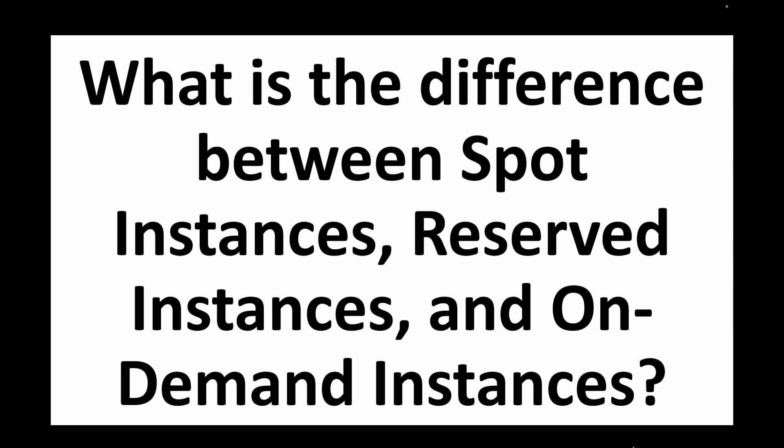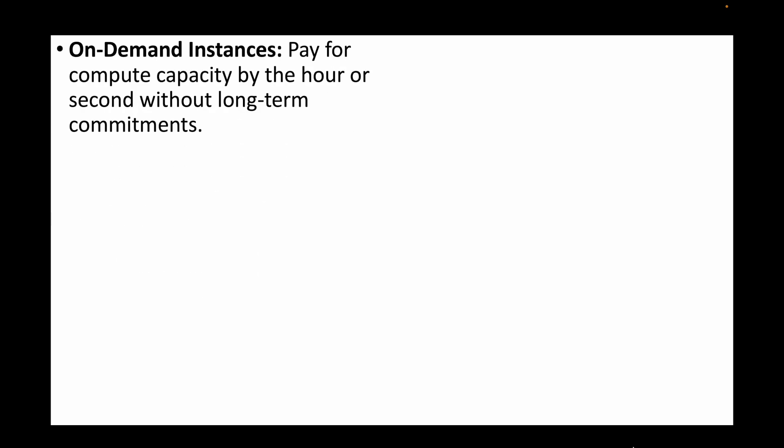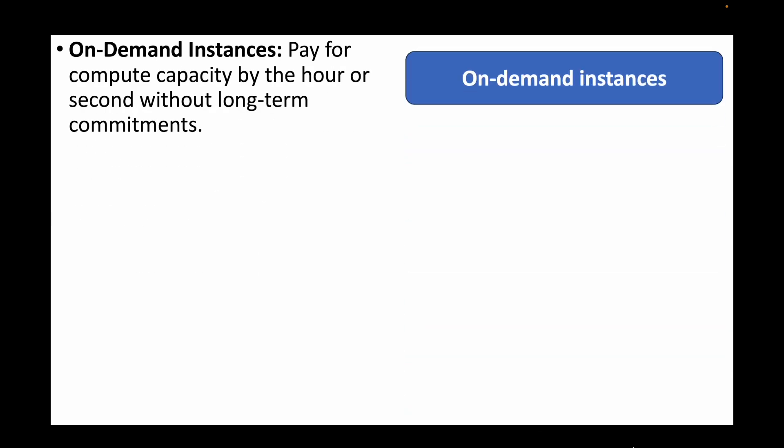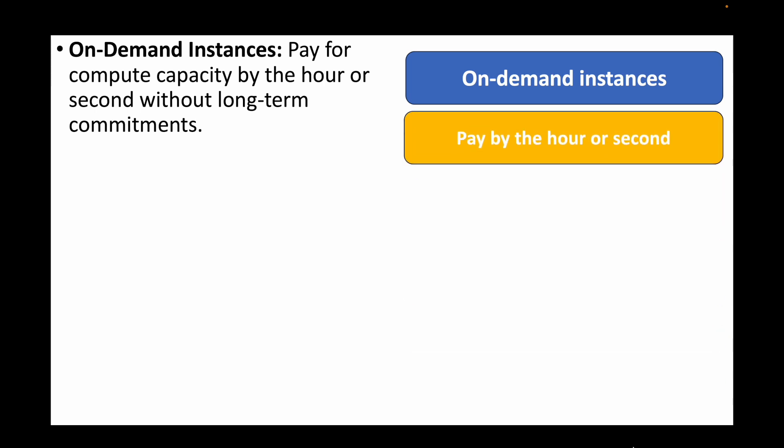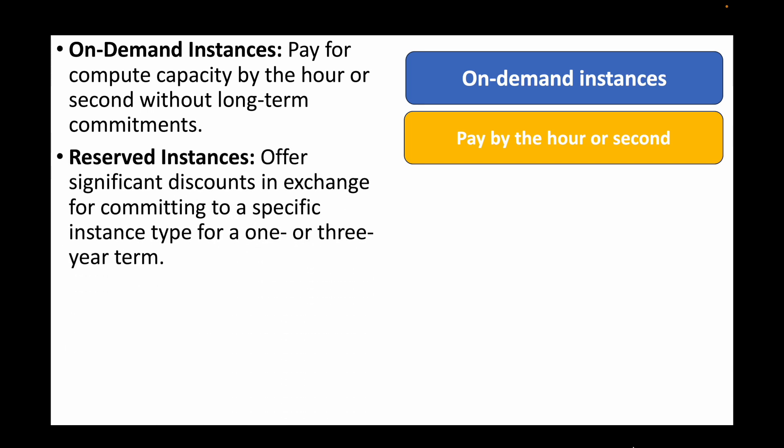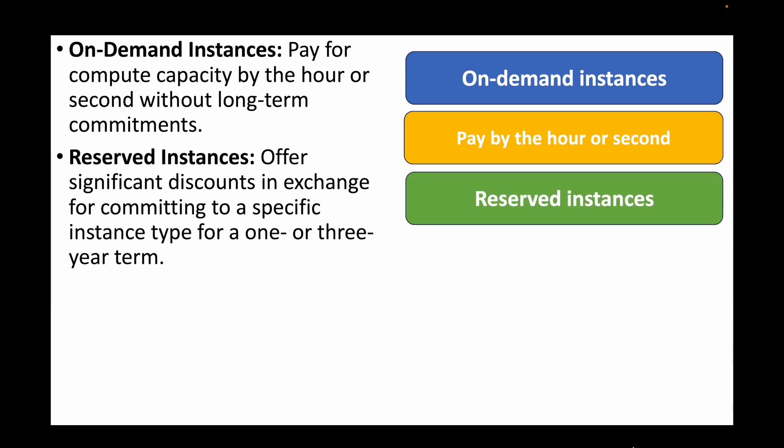The next question is: what is the difference between spot instances, reserved instances, and on-demand instances? On-demand instances allow you to pay for compute capacity by the hour or by the second with no commitment or contract period — you can launch or terminate instances whenever you want. Under reserved instances you commit to a contract and in return receive significant discounts; the contract period is one year or three years.